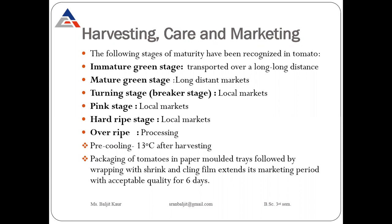If we harvest tomatoes at immature green stage, the fruits can be transported over a long distance. So if we have to transport tomatoes over a very long distance, we have to harvest at immature green stage. For local markets, the fruits of tomato are harvested at turning stage (breaker stage) or at pink stage, and the hard ripe stage is also recommended for local markets.